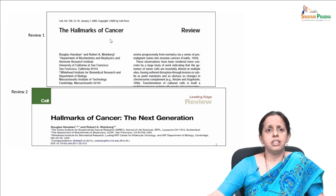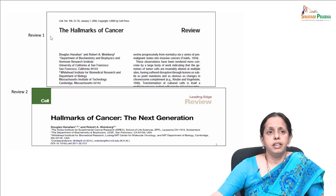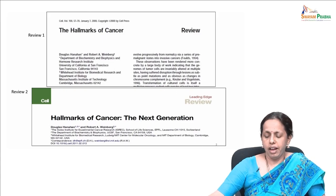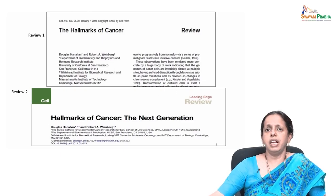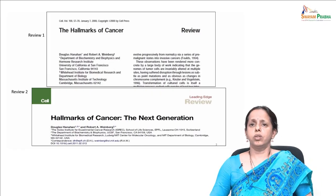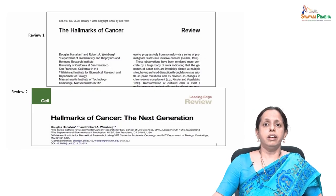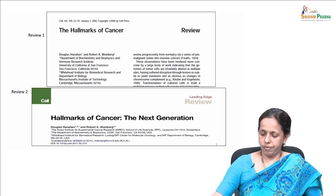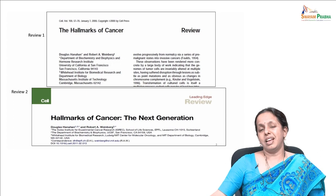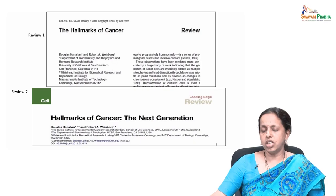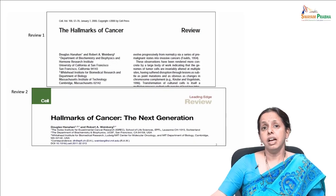The hallmarks of cancer were first put forward by Douglas Hanahan and Robert Weinberg. They came up with two separate reviews, each published a decade apart. In their very influential review, they attempted to organize the dense complexities of cancer biology into six major hallmarks or six major events.